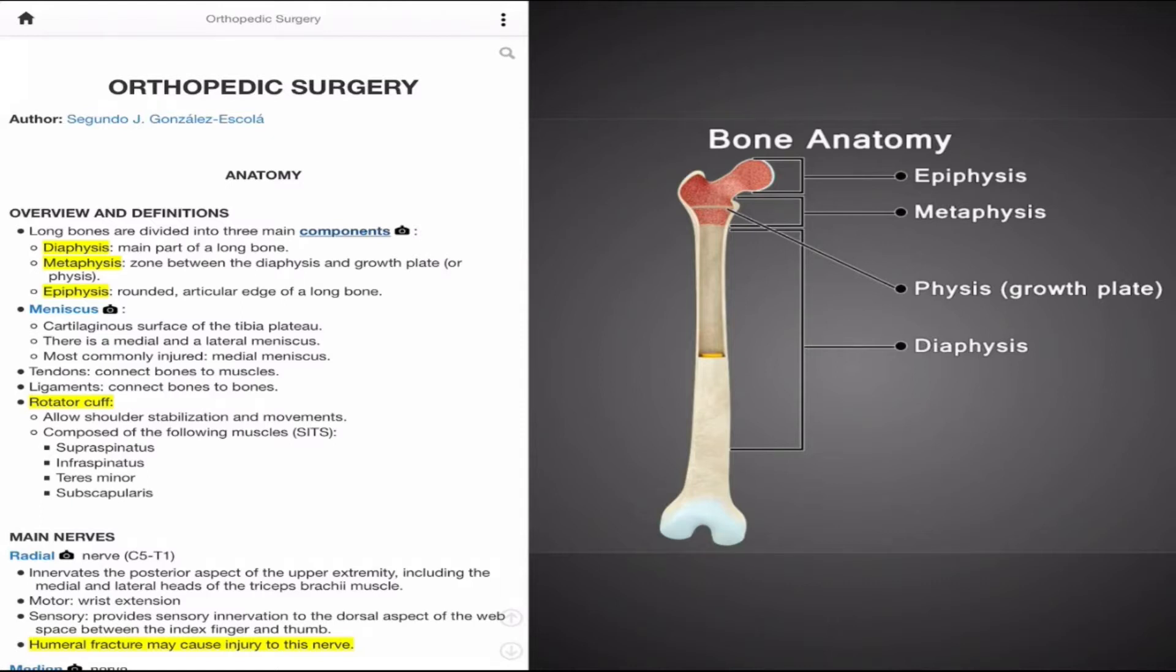Next is the metaphysis, which can be recognized as the widened portions of the long bones. This is the zone of the bone that sits between the growth plate and the diaphysis. It is important that we next recognize the growth plate, or physis, which is a translucent cartilaginous disc that sits between the epiphysis, or end of the long bone, and the previously mentioned metaphysis. The physis is responsible for the longitudinal growth of long bones as we develop, and is present in skeletally immature patients.